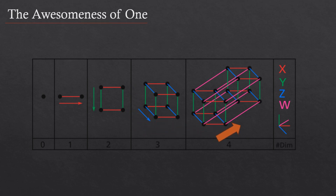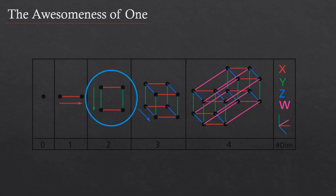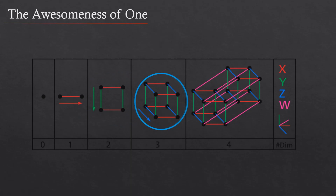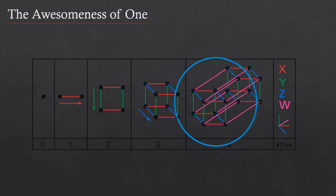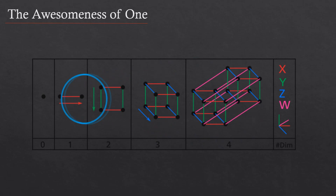In traditional measurement, unlike dimensional measurement, we don't think too much about each shape having a boundary of one dimension less — that a line has a boundary of two points, or that a square has a boundary of four lines, or that a cube has a boundary of six planes, or that a tesseract has a boundary of eight cubes. As we learned in Episode 11, the pointal barrier would have us believe that a point does not even have a boundary.